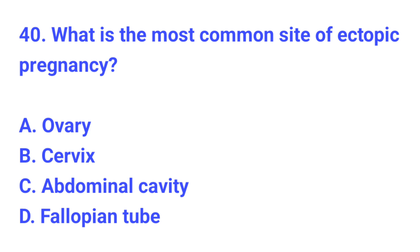Question number 40. What is the most common site of ectopic pregnancy? The correct answer is D, fallopian tube.